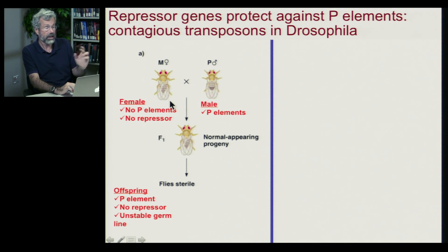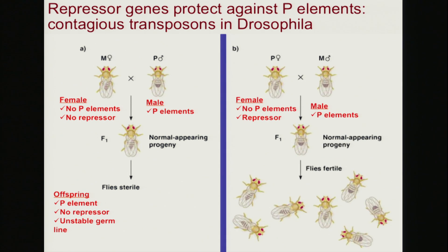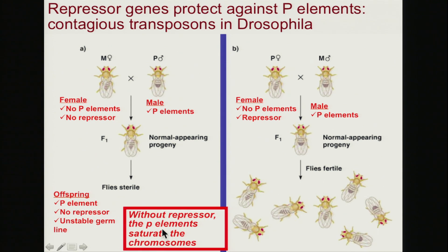Consider a female who has not yet been infected with these transposable elements and also has no protection against them. If she mates with a male who carries these infectious transposons, she will have offspring that look normal, but they carry the P element, lack a repressor, and have an unstable germline. Contrast that with a female who possesses a repressor gene: when she mates with an infected male, his transposons get into the offspring, but their offspring will be fine. Without the repressor, the P elements spread so quickly within the genome that they saturate the chromosomes.